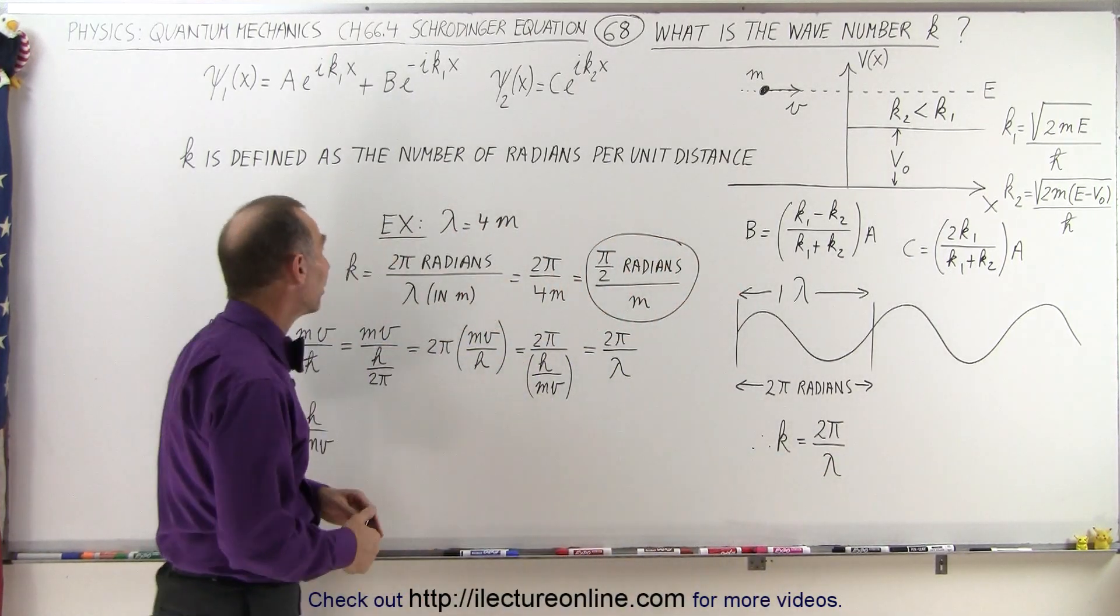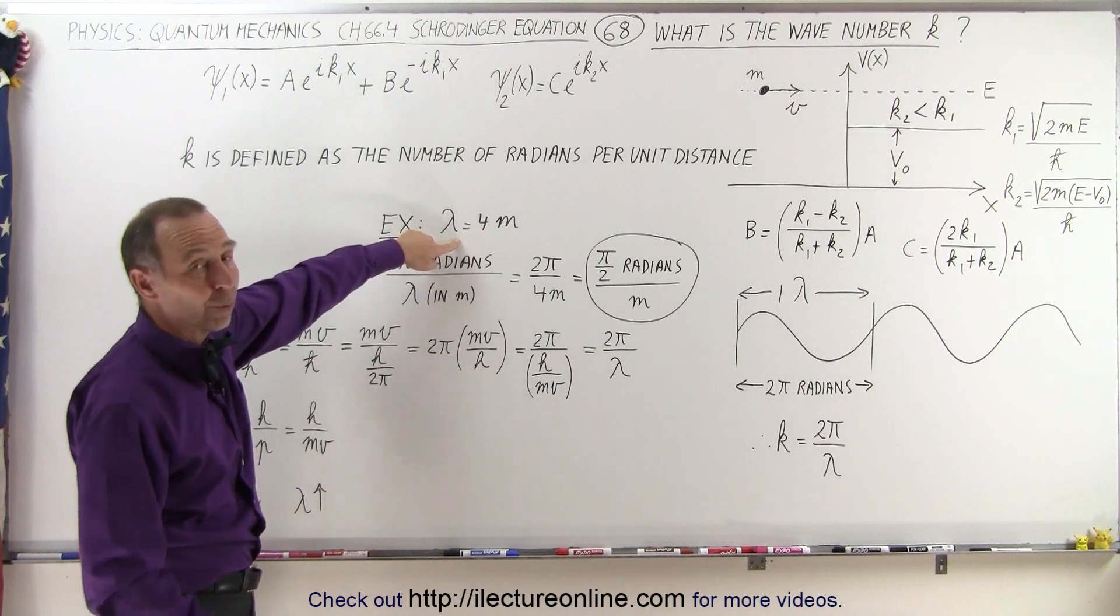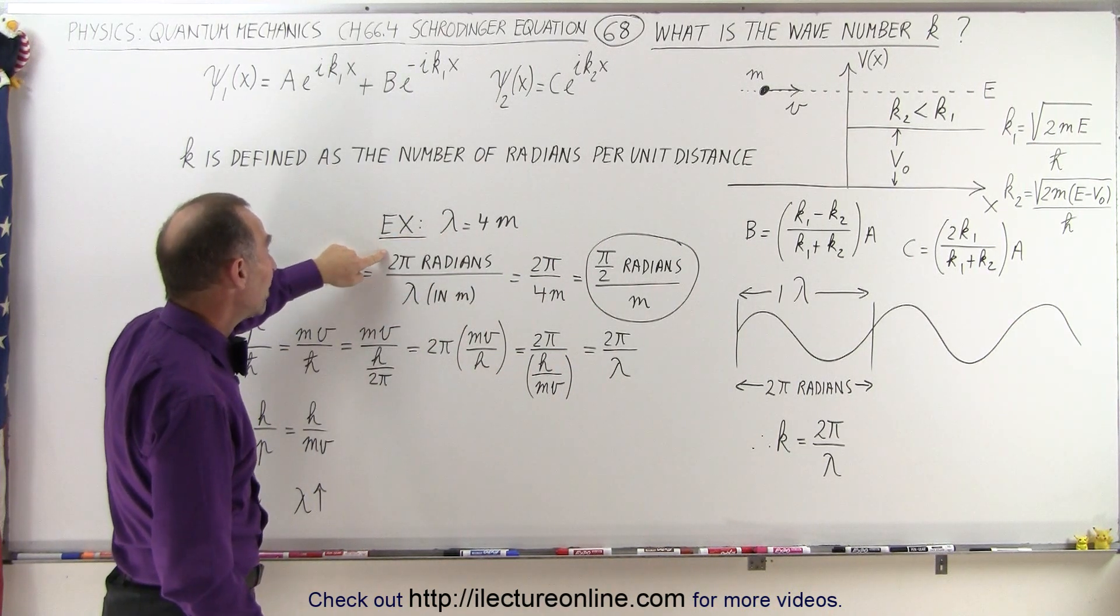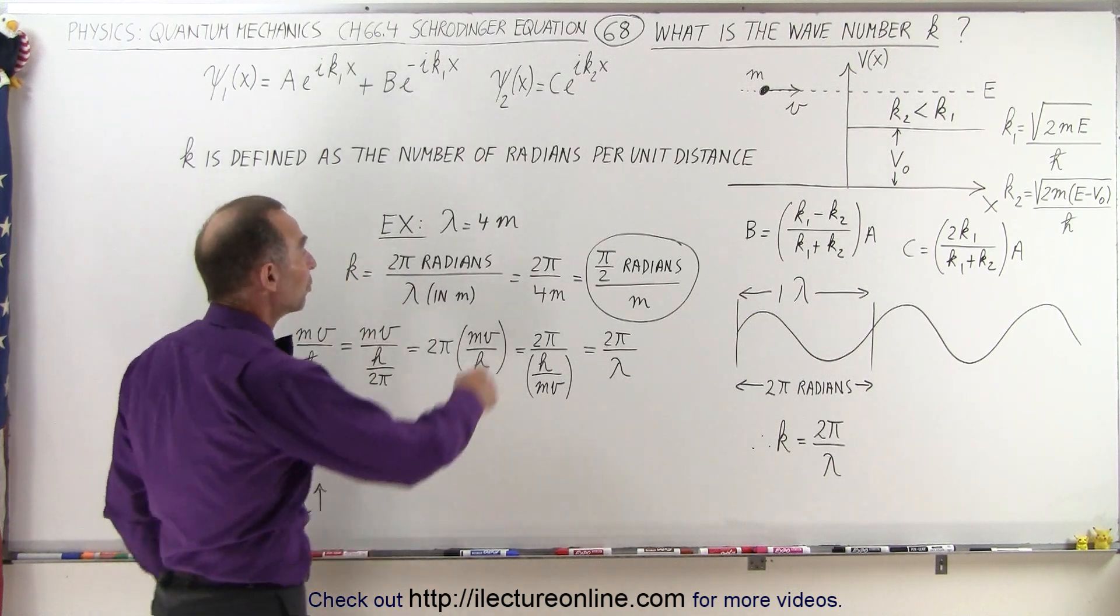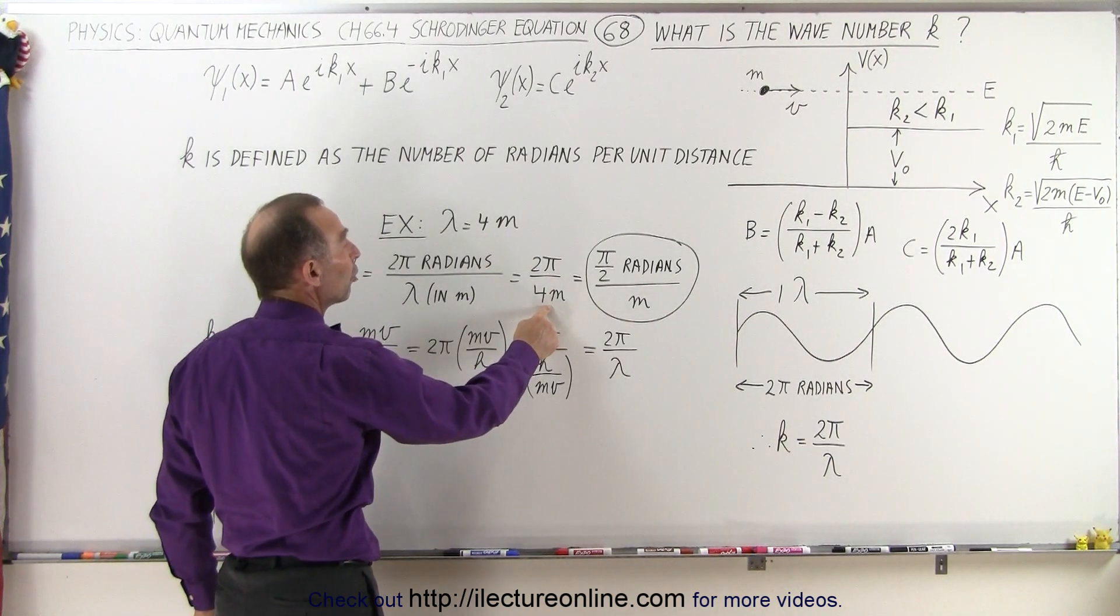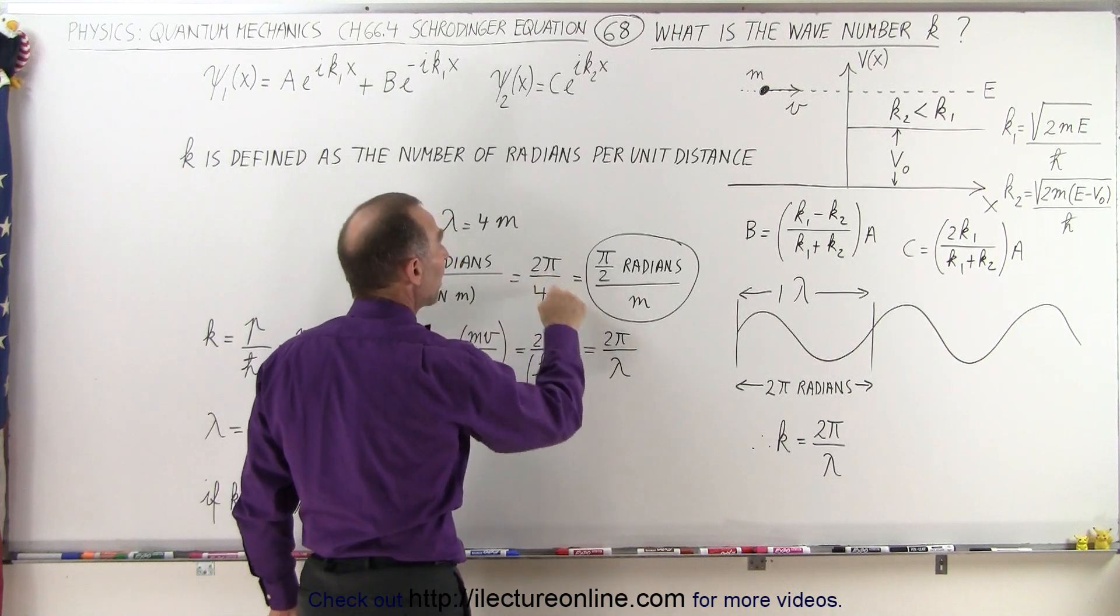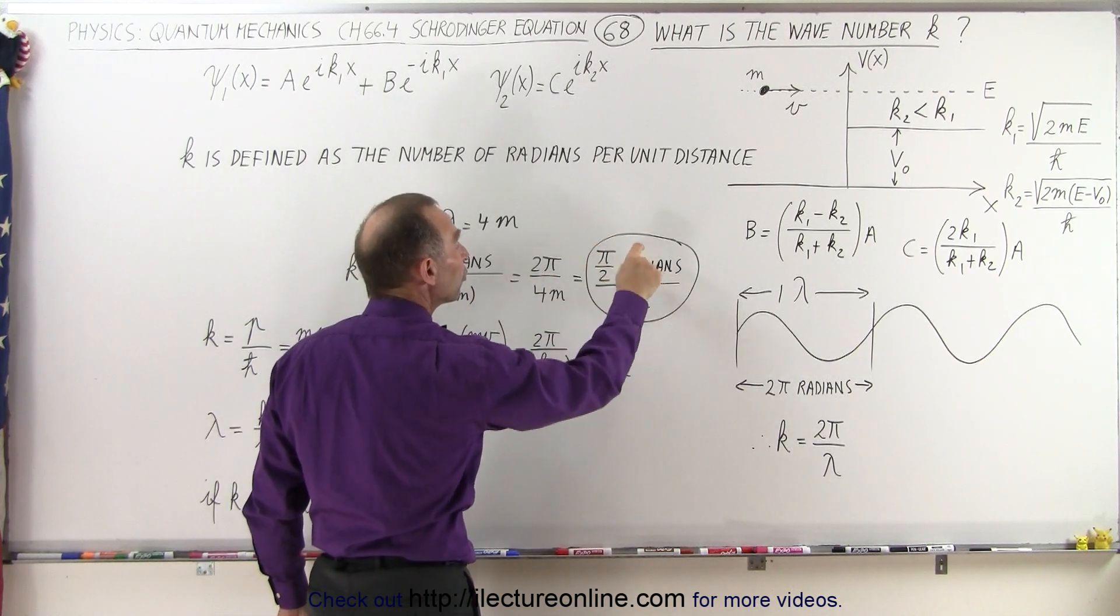Now as an example, let's say that the wavelength of a wave is 4 meters. k is defined as 2π radians divided by lambda, the wavelength in meters, so it would be 2π divided by 4 meters. And if we divide 4 into 2π, we get π/2 radians per meter.